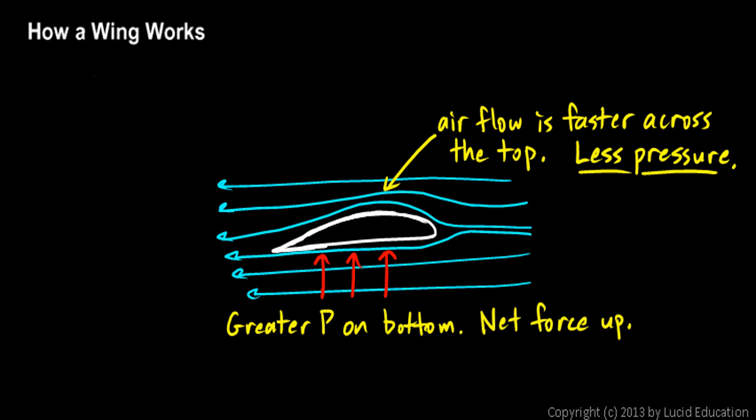And you don't have to have a huge difference in pressure. Just a small drop in pressure on the top will result in a large force on the bottom if the area is large. Because the force is going to depend on the pressure and on the area across which the pressure is applied. So a big wing can generate a lot of lift even if there's just a relatively small change in pressure.